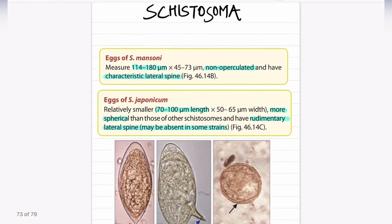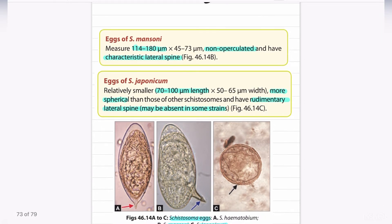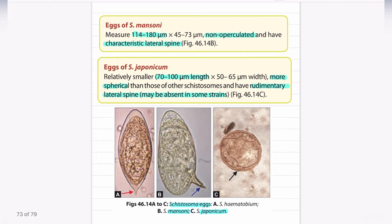Next, we are going to discuss about Schistosoma. The eggs of Schistosoma mansoni measure 114 to 180 micrometers by 45 to 73 micrometers, are non-operculated, and have a characteristic lateral spine, as seen in the diagram. The egg of Schistosoma japonicum is almost oval in structure, relatively smaller than the egg of S. mansoni, and may sometimes present with a rudimentary lateral spine.